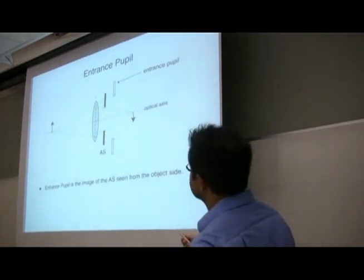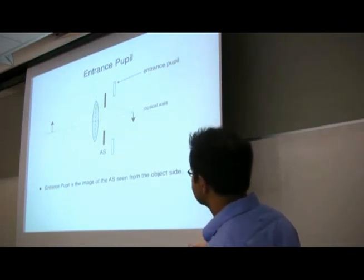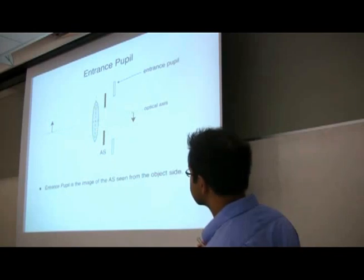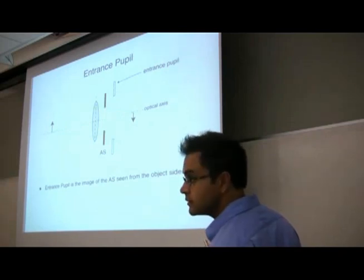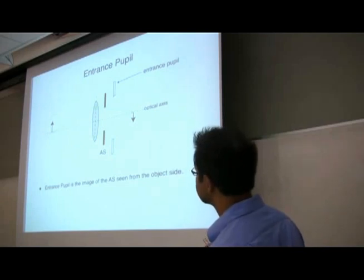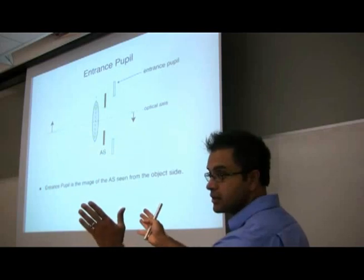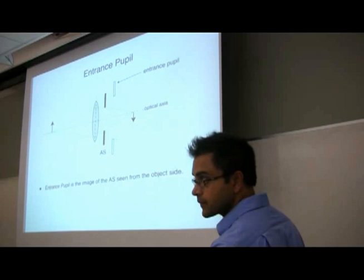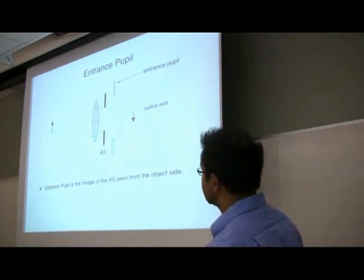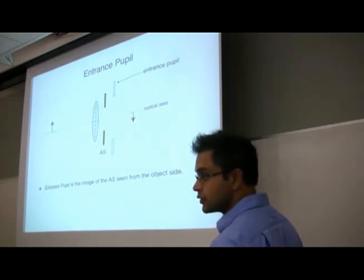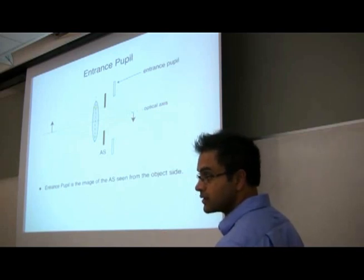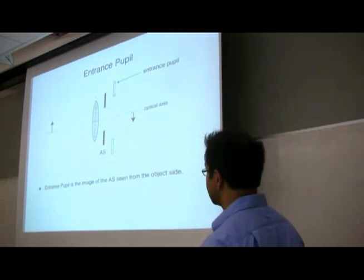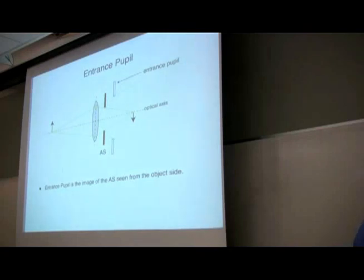The entrance pupil is the image of the aperture stop seen from the object side. If you have an aperture stop, a lens, and you're forming an image, if you look from the object side you will see a virtual image of the aperture stop. This is the entrance pupil — it is the angular aperture of the imaging system. The angular aperture is important because it determines resolution: how small a feature can you see.